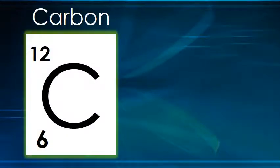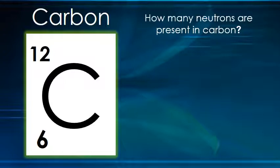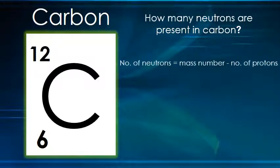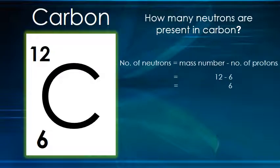Now in carbon, the question is how many neutrons are present? Carbon's mass number is 12. To find neutrons, you minus the number of protons, which are 6, from the mass number of 12, giving 6 neutrons.